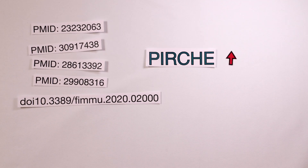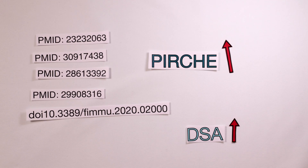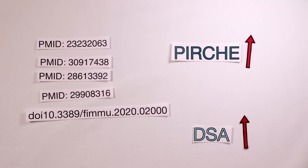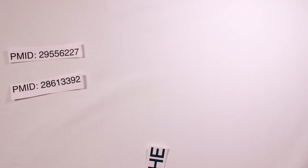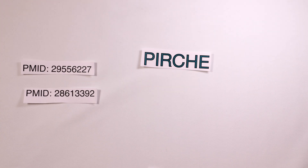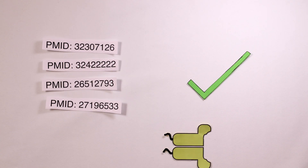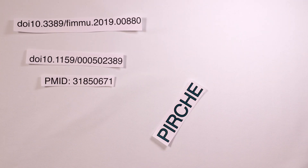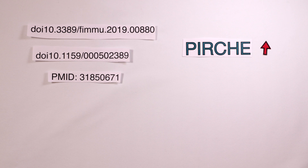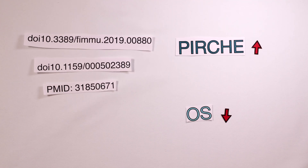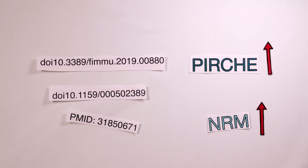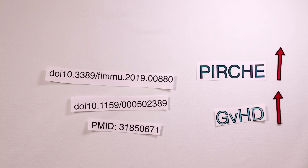Studies have shown that kidney transplanted patients with high PERCH scores had a higher incidence of developing donor-specific HLA antibodies. Patients with increased PERCH scores furthermore had reduced rates of graft survival. A few studies suggest that this also applies to other organ transplantation settings. In unrelated donor stem cell transplantation, it was observed that the presence of PERCH mismatches is associated with lower overall survival, higher non-relapse mortality, and higher incidence of chronic graft-versus-host disease.